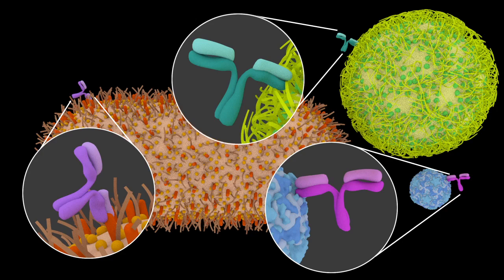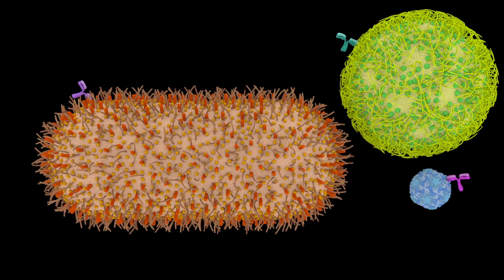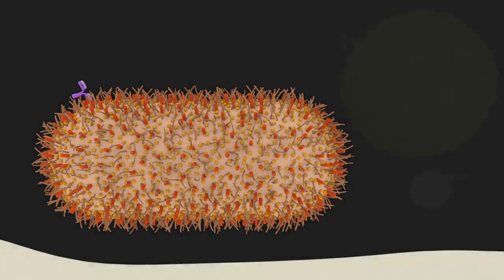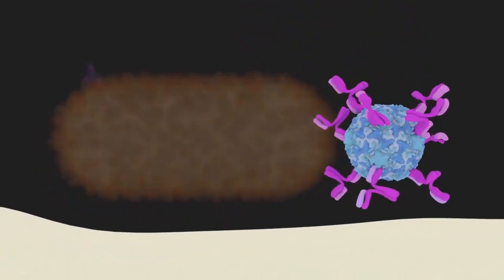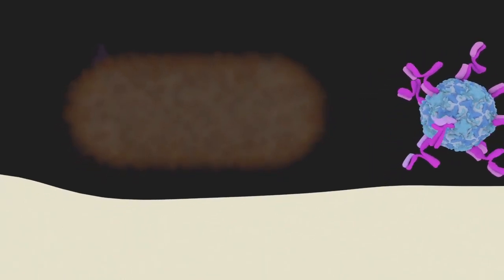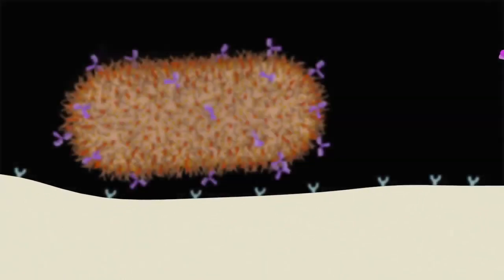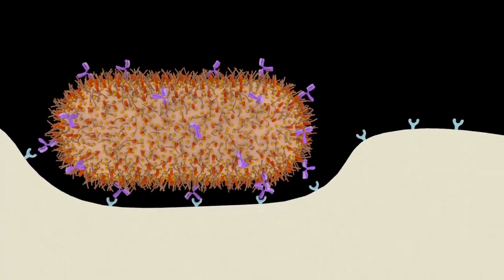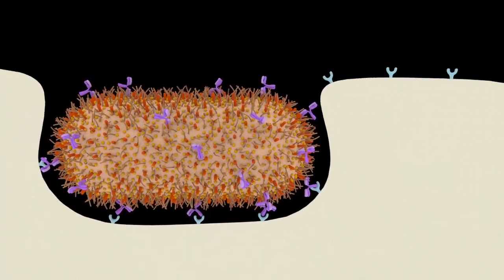Antibodies can serve two functions. Antibodies can neutralize pathogens by binding to their antigens and blocking their action, such as preventing a virus from entering a cell or blocking a bacterial toxin. Antibodies also mediate the destruction of pathogens by acting as markers that other cells in the immune system recognize.